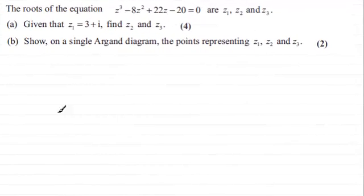Hi. What we have here is that the roots of the equation z cubed minus 8z squared plus 22z minus 20 equals 0 are z1, z2, and z3.